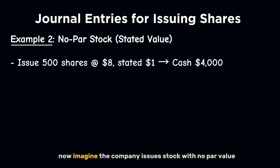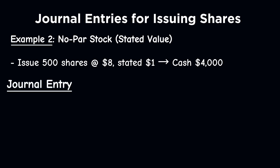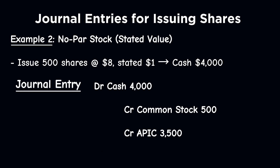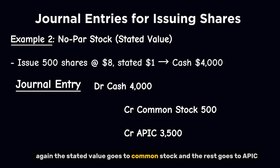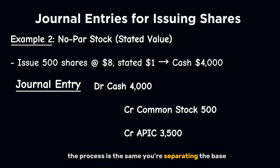Now imagine the company issues stock with no par value, but assigns a stated value of $1 per share. It sells 500 shares at $8 each — total cash received is $4,000. Debit cash $4,000; credit common stock $500; credit APIC $3,500. Again, the stated value goes to common stock and the rest goes to APIC. Whether it's par or stated value, the process is the same: you're separating the base legal capital from the extra paid-in capital.